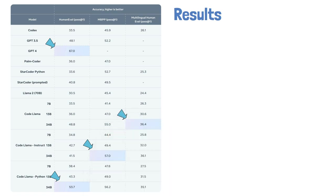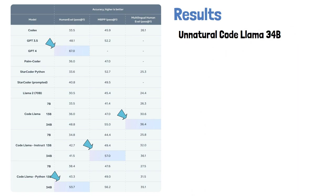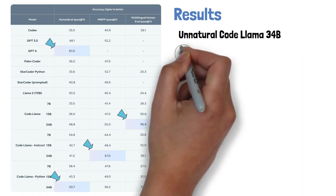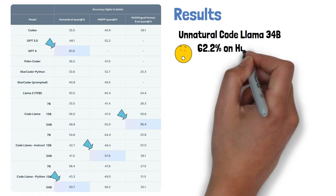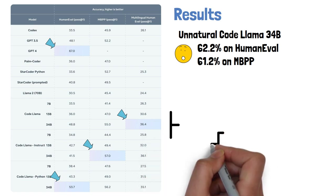In the paper, they also include results for another model which was not released yet, called Unnatural CodeLama with 34B params, which outperforms the other CodeLama models with 62.2% on HumanEval and 61.2% on MBPP.